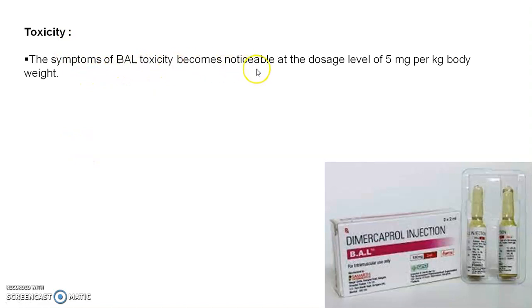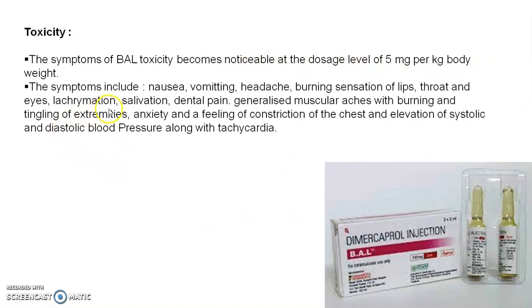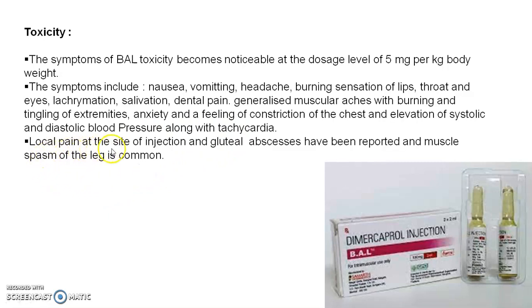Symptoms of BAL toxicity become noticeable at dosage levels of 5 mg per kg body weight. BAL, which is used as an antidote for heavy metals, when used in excess or accidentally shows symptoms including nausea, vomiting, headache, burning sensation of the lips, throat, and eyes, lacrimation, salivation, dental pain, generalized muscular ache with burning and trembling, excitement, anxiety, and a feeling of constriction of the chest. Elevation of systolic and diastolic blood pressure and tachycardia may also occur.